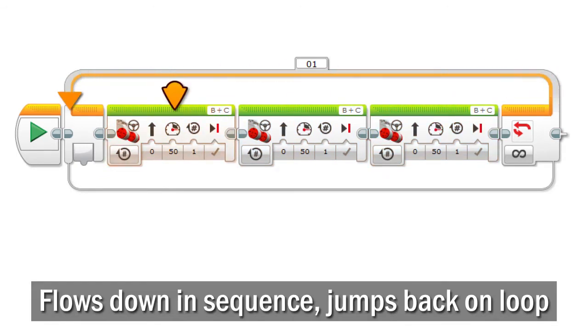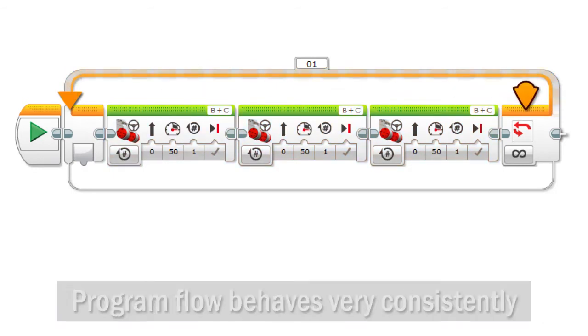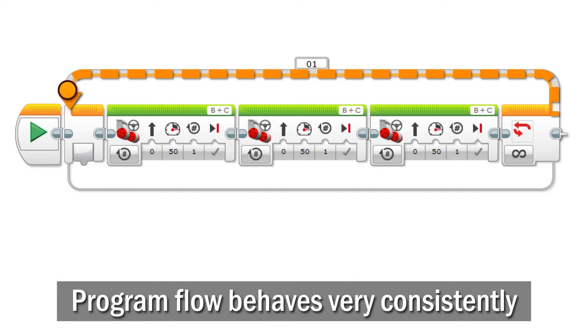From there it just behaves normally. Flow down the line in sequence and maybe jump back again. The flow of the program behaves very consistently at all times.